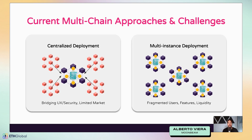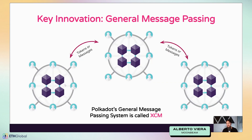The key innovation here is general message passing, which has been around for a while but is becoming more prominent now that all the pieces are in place. The idea is that you have multiple blockchains living in their own world, and you can pass tokens or messages through GMP — sending tokens is actually a subset of sending a message. There are many prominent protocols in this space; the one we've worked with most is Axelar, but we also have Layer Zero, Wormhole, and many others bringing their GMP solutions to Moonbeam.